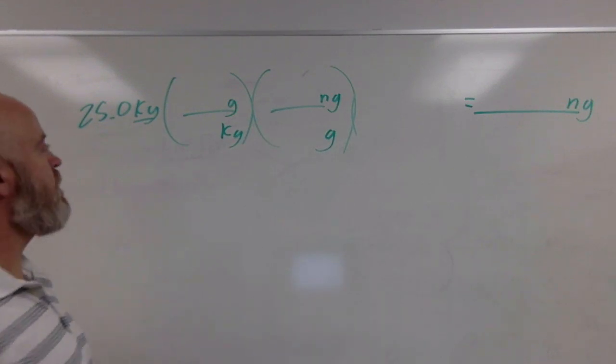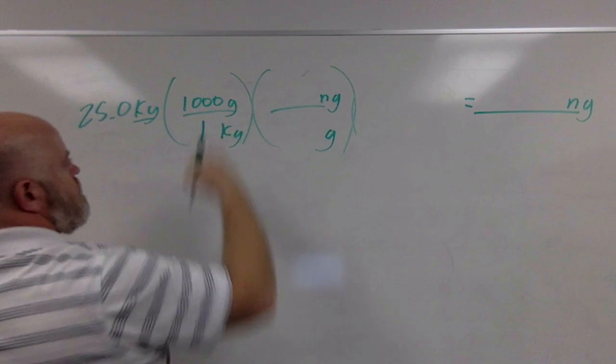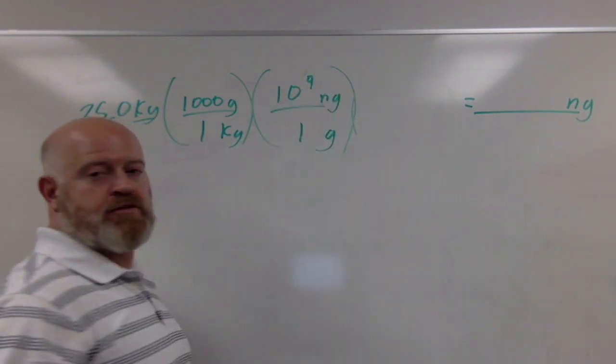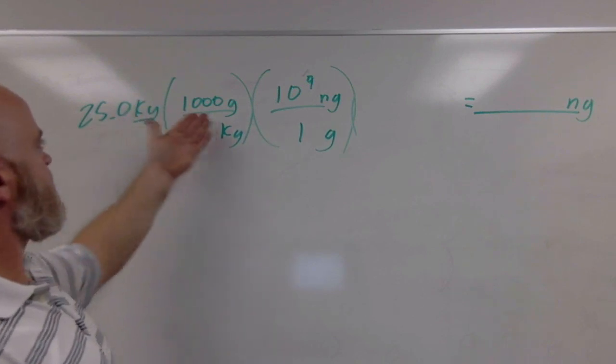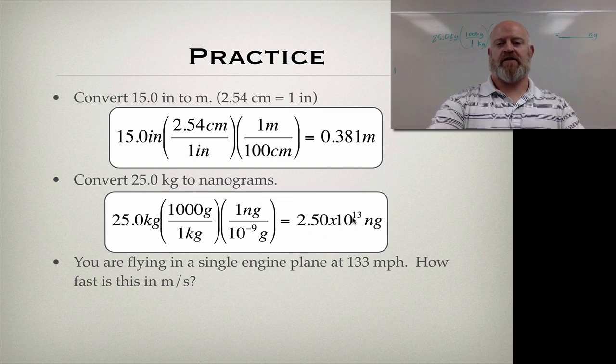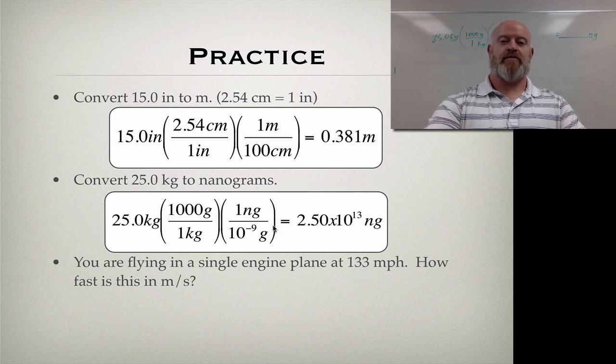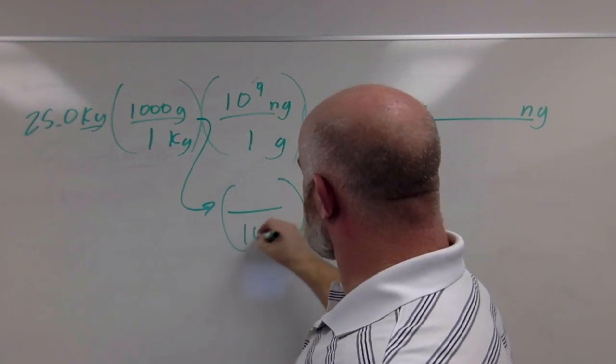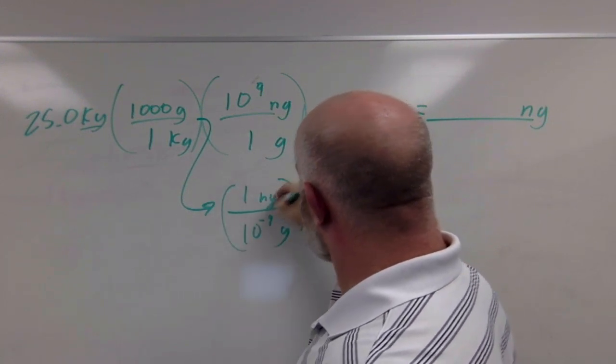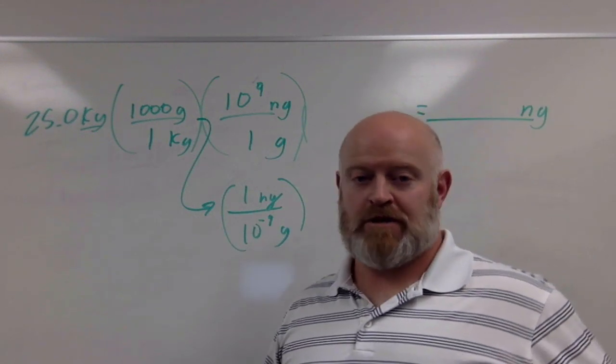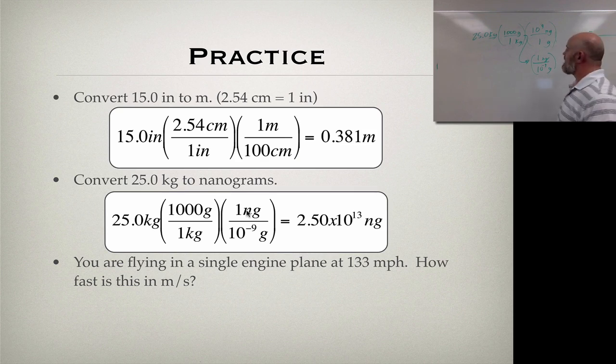I know that for every one kilogram I get a thousand grams. I know that for every one gram I get 10 to the ninth power nanograms. 25 times a thousand times 10 to the ninth power, and if we do that we get 2.50 times 10 to the 13th nanograms. Notice when I did this previously, I flipped this—I said there's 10 to the negative 9 grams for every one nanogram. That's the same thing, isn't it? There's actually another pathway that could have been done. Multiplying times 10 to the ninth is the same thing as dividing by 10 to the negative nine mathematically.